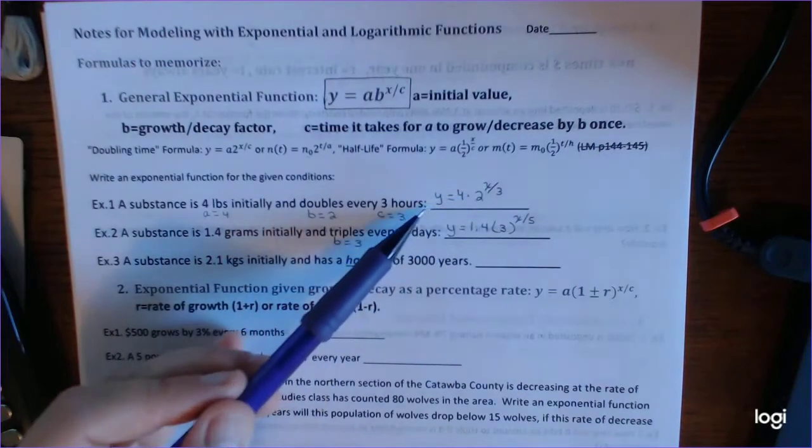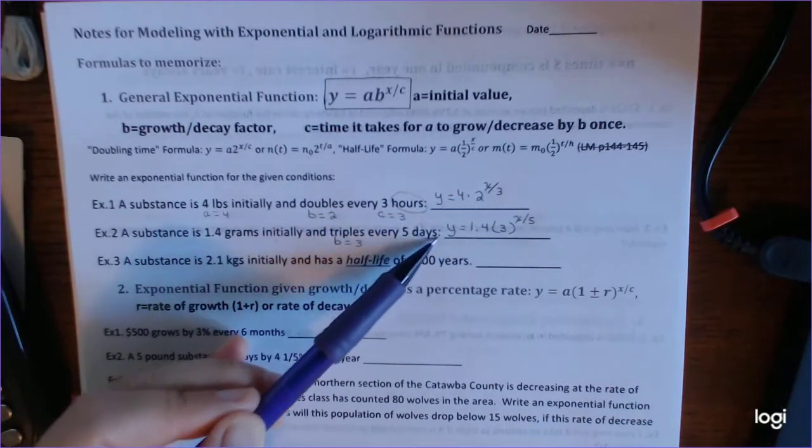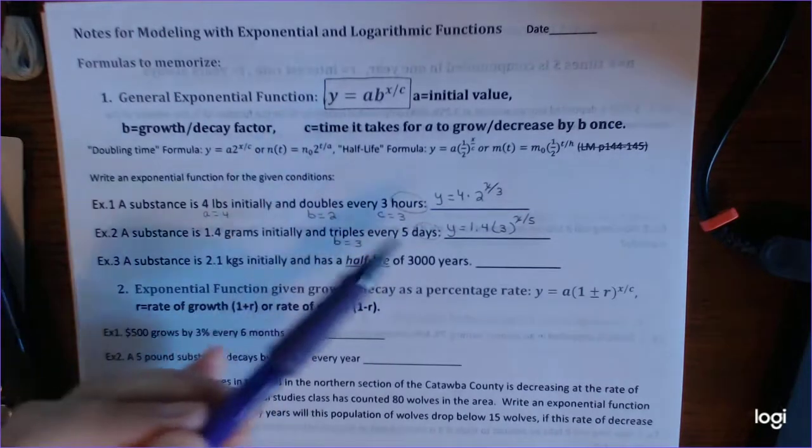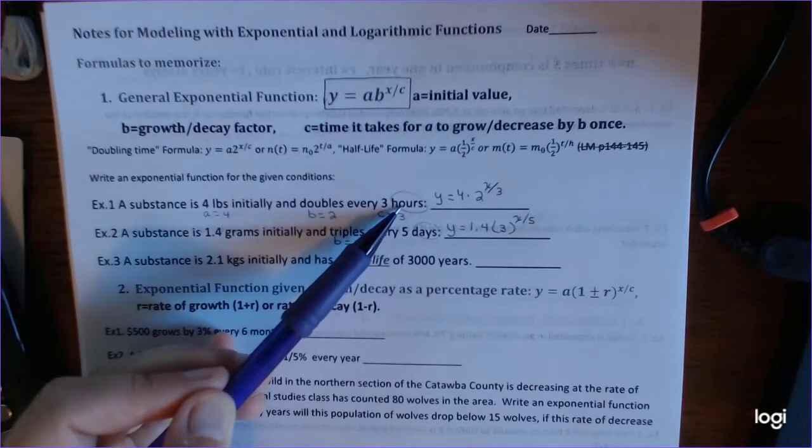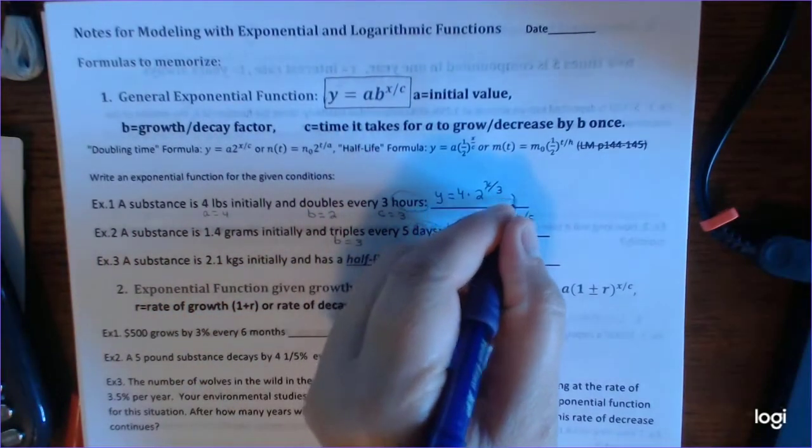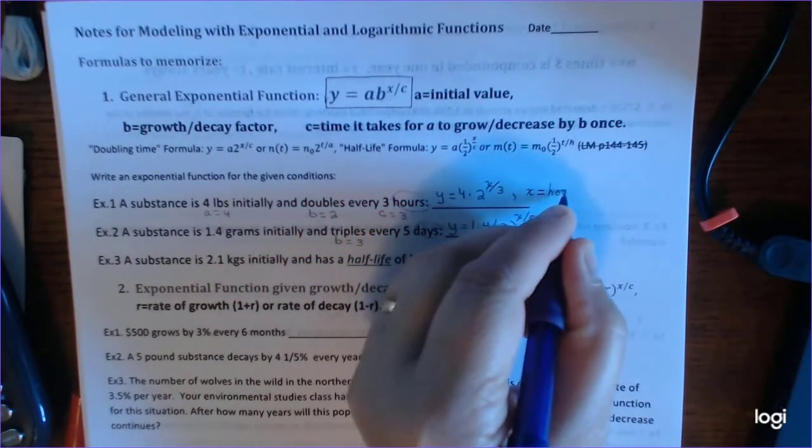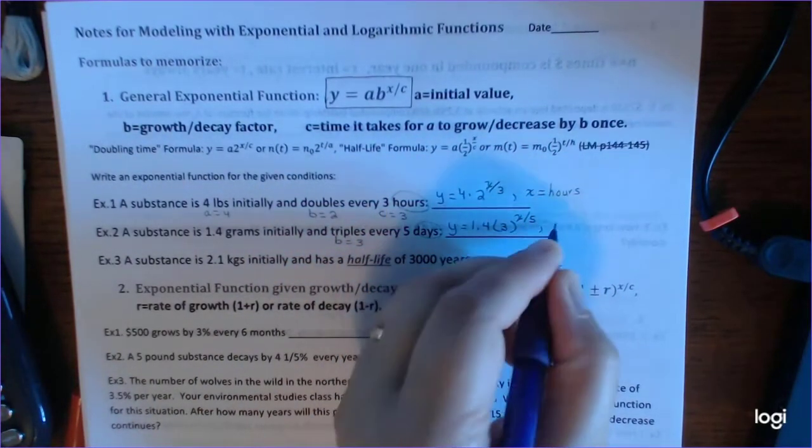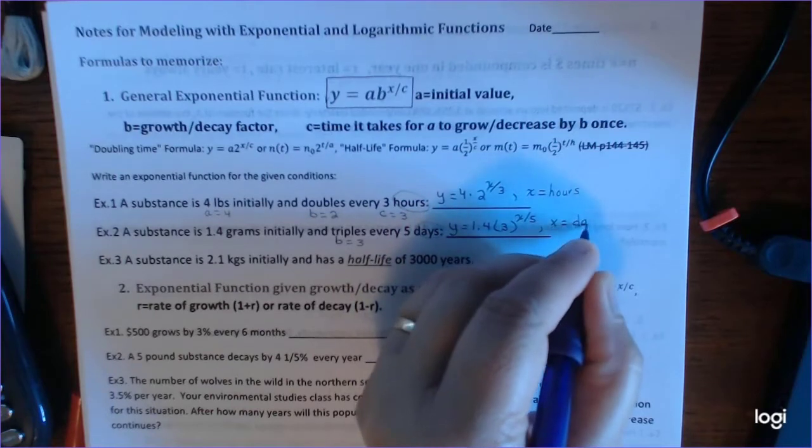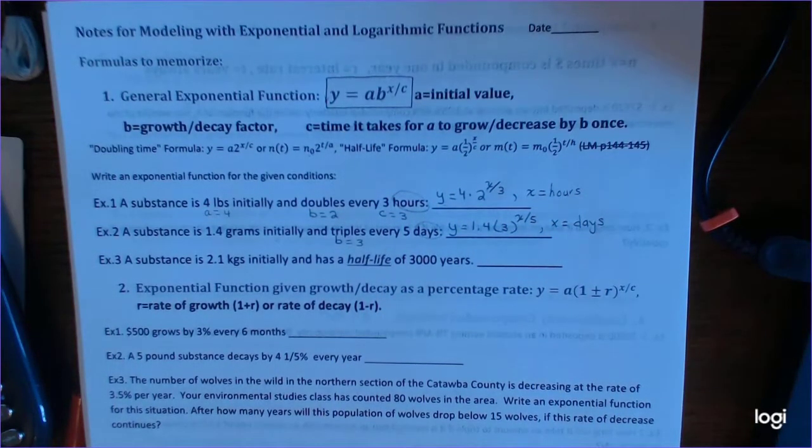Because with exponentials, it's extremely important that you identify for people what X is. Because here, your unit is hours, and here your unit is days. And so that makes a big deal. I could say 2 days on this problem, and you would have to convert it to 48 hours. So you always are going to follow up your function by saying, X in this problem is in hours, and X in this problem is in days. So be sure and do that.